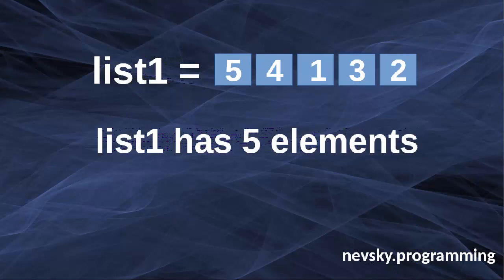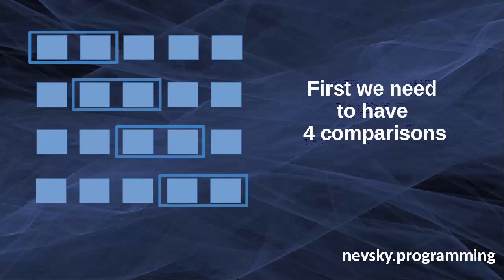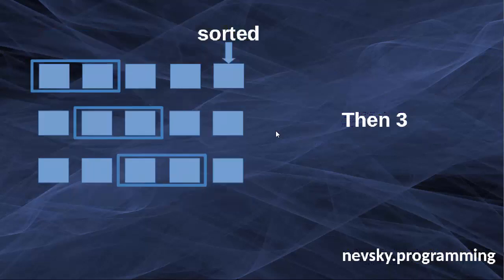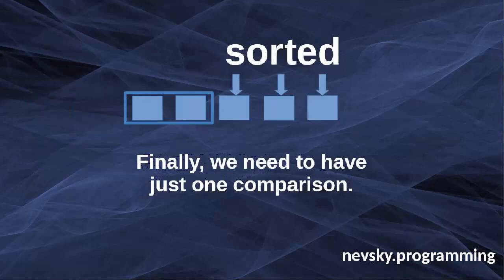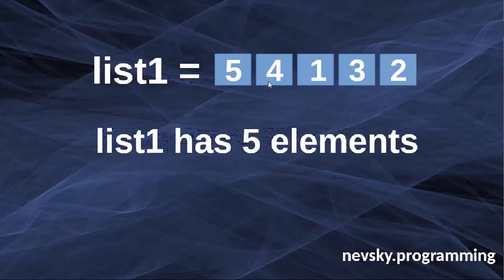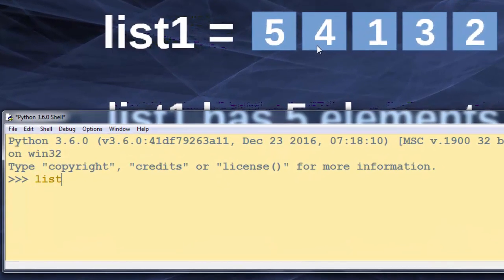The list in this example has five elements. With five elements, bubble sort first needs four comparisons to compare the first and second element, second and third, and so on. Then three comparisons, then two comparisons, and finally just one comparison, and then all elements are sorted. Our list has five elements, and I'm going to start typing the bubble sort code using this same list.